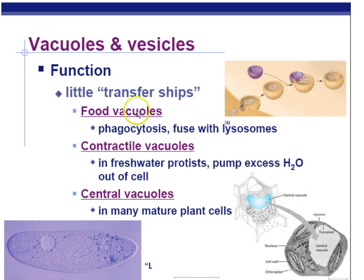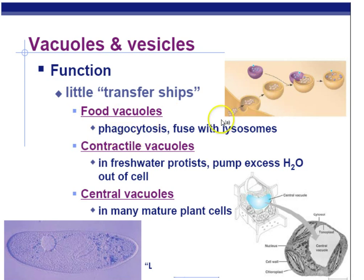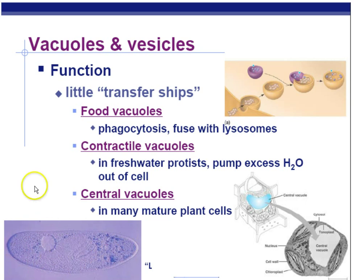Vacuoles and vesicles — the two Vs — are both involved with transfer and storage. Food vacuoles are made by phagocytosis when the cell engulfs a food particle, making a little vacuole until it fuses with a lysosome. Contractile vacuoles are found in freshwater organisms like Euglena, and are able to squeeze out the extra water they take in by osmosis. Central vacuoles in plant cells are large and used for storing water and ions.